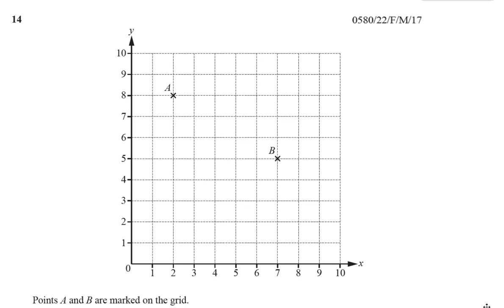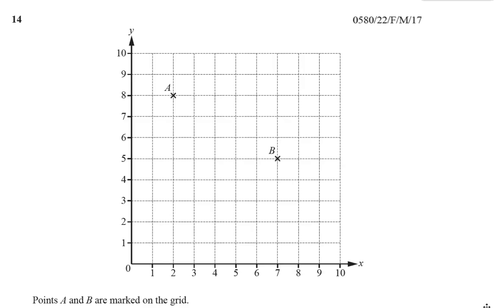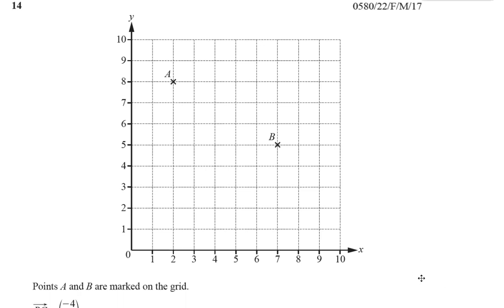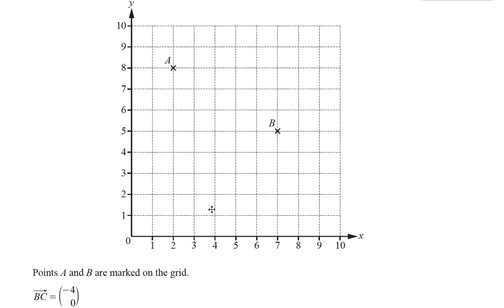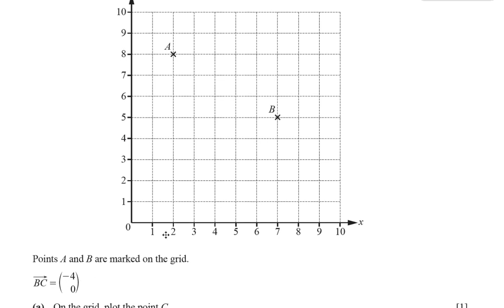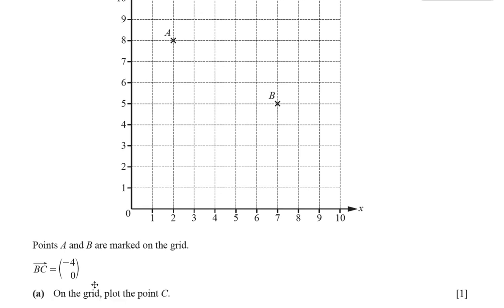Question number 14 from February, March 2017, paper 2, variant 2. We are given a grid, and we are told that there's a point A and B that are marked on the grid. B is at 75, and A is at 28, and it tells us that the vector from B to C is minus 4, 0, and part A says on the grid plot the point C.